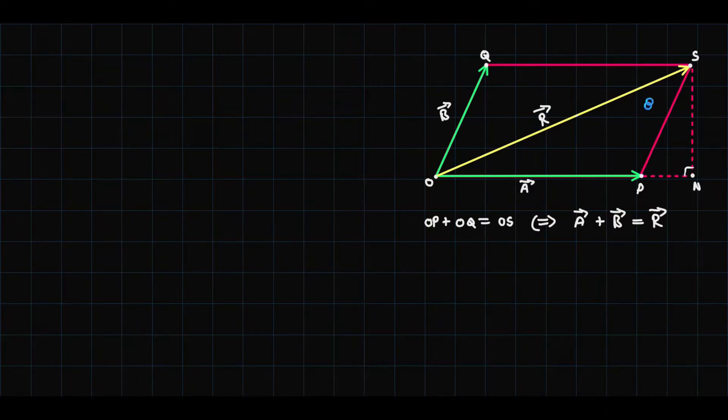Now using Pythagoras theorem we can find the magnitude of this resultant here. Pythagoras theorem states that the square of this side equals to the square of this side plus the square of this side, so that would be R squared equals ON squared plus NS squared. Now this will be our equation number 1.